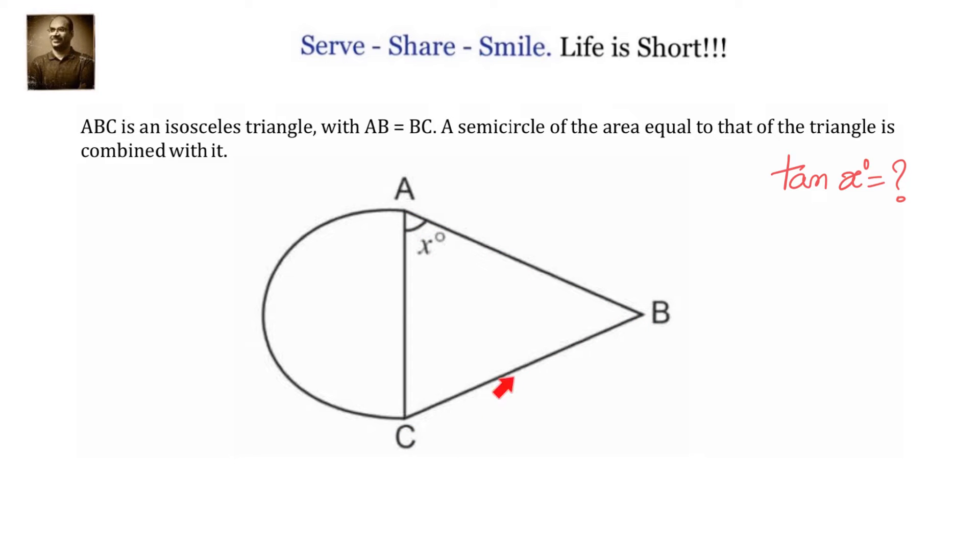We have been given an isosceles triangle and a semicircle which is based on one side of the triangle. AB equals to BC. We have to find out what is the value of tan x.